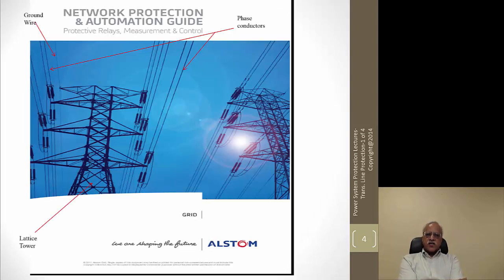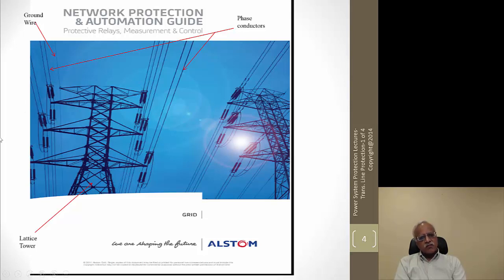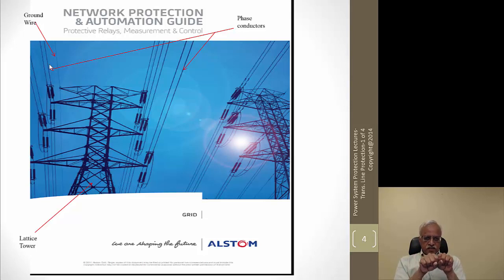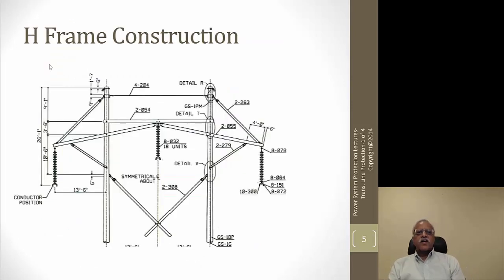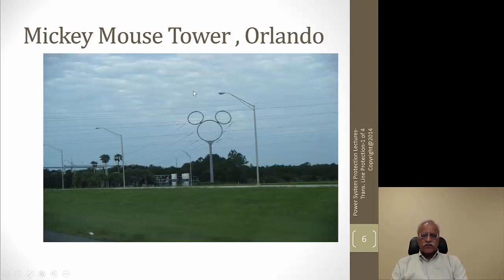This image from the reference book's front cover shows a steel lattice tower with a ground wire on top. There are two three-phase transmission lines on both sides of the tower, and each phase has two wires — a bundled conductor. The two wires with spacers between them reduce radio interference in EHV systems, or they increase current-carrying capacity. The H-frame wooden structure has phases hung below insulators. There is also a Mickey Mouse tower in Orlando near Disney World.